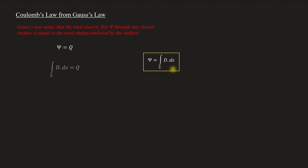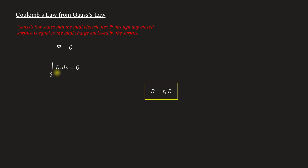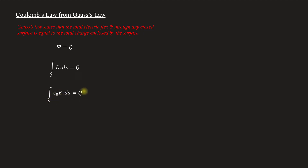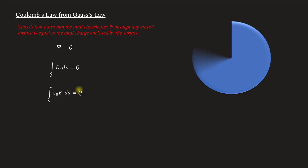So I can substitute this for phi. The expression becomes: integral over s of D dot ds is equal to q, which gives us epsilon zero times the integral of E dot ds is equal to q.